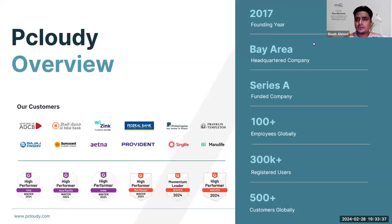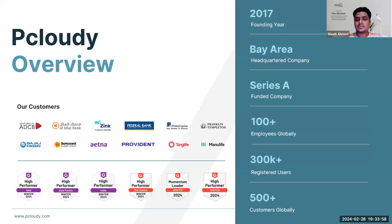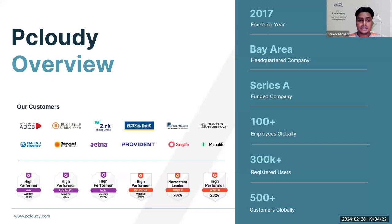A quick overview about our organization: we were founded in 2017, headquartered in Bangalore, and we are a Series A funded company with over 100+ employees globally. We also have more than 300,000+ registered users on our platform doing functional testing — both manual and automation. On the customer side, we have more than 500+ customers globally across various domains, including banking, financials, insurance, and gaming. These are some of our G2 high performer ratings received for the year 2024.